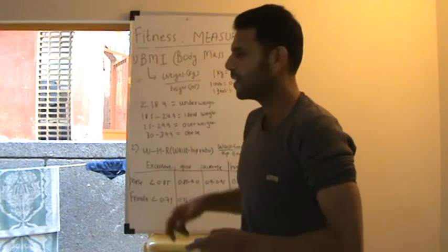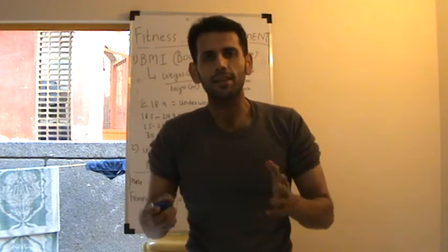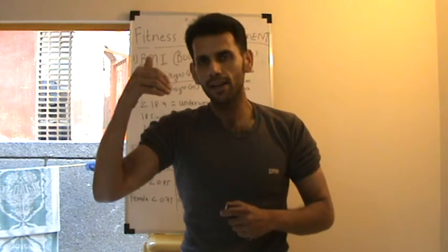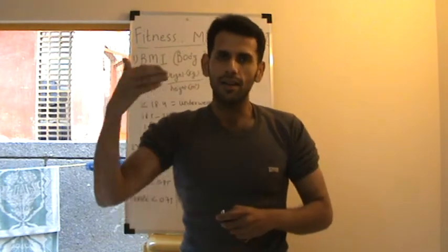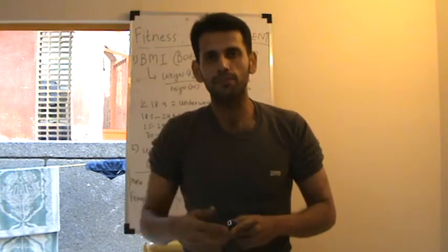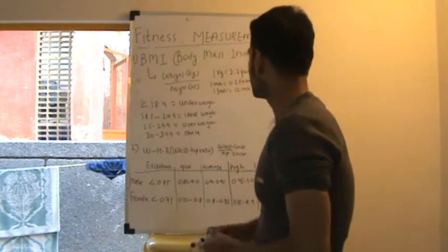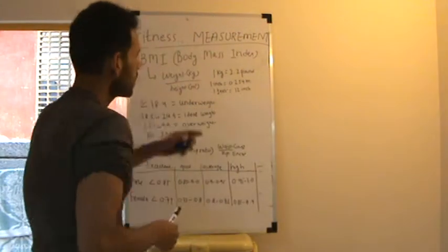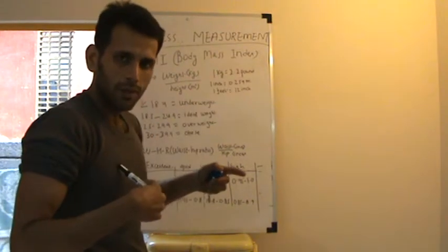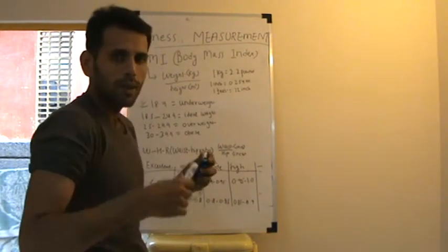You must have heard of BMI. BMI is nothing but your weight in kilograms divided by your height in meters squared. Now, supposing I weigh 163 pounds, and if I have to convert that to kilograms, one kilogram is equal to 2.2 pounds.